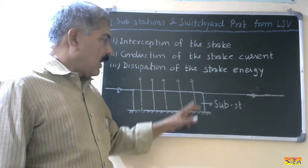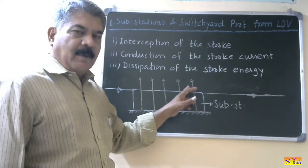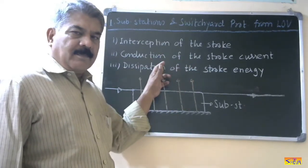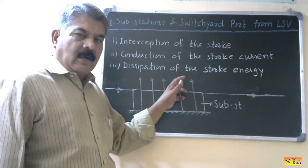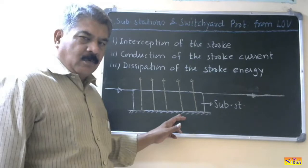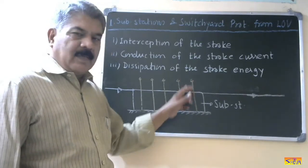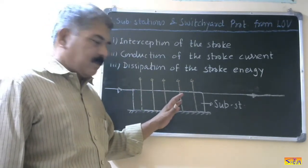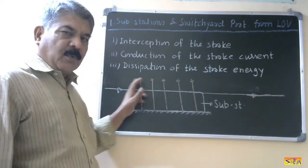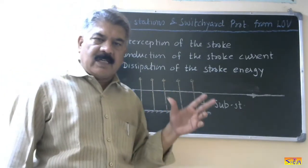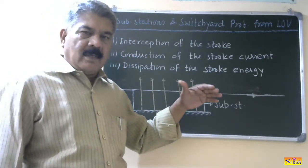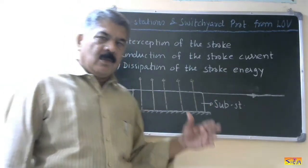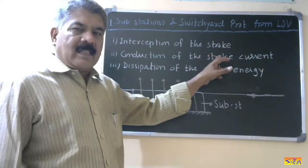These metallic objects are connected to ground and have sufficient height compared to the power system equipment. If there is a lightning cloud overhead, these objects will attract it and discharge the lightning overvoltage. So either metallic objects are installed at regular intervals, or the entire substation is provided with electrostatic shielding — installed at sufficient height and covering the entire substation or switchyard — so they intercept or attract the lightning stroke.